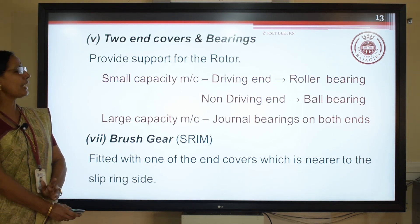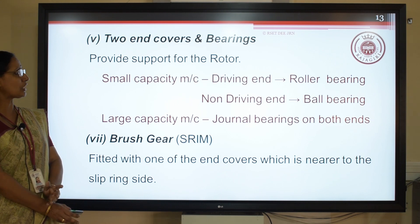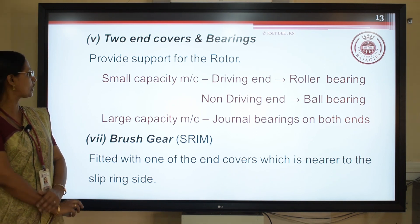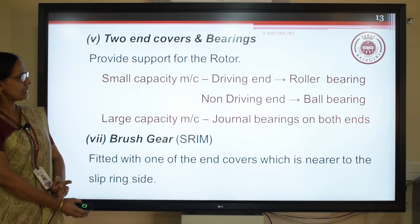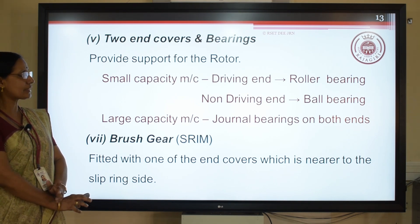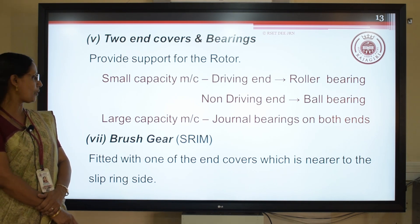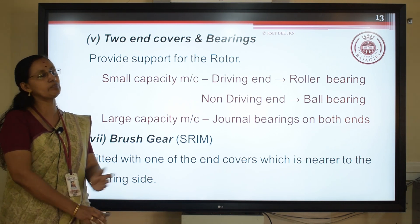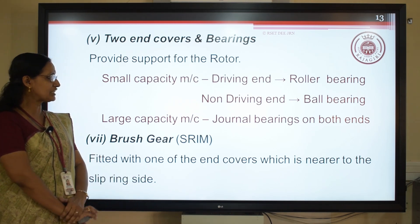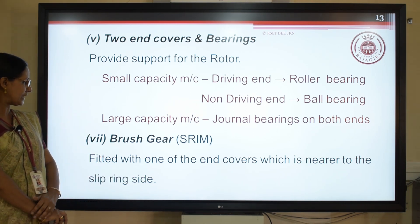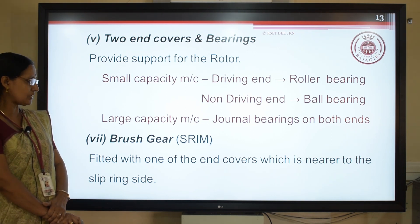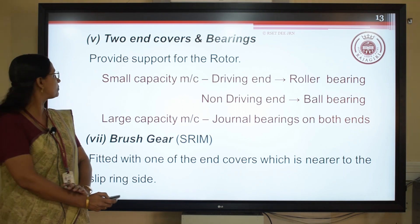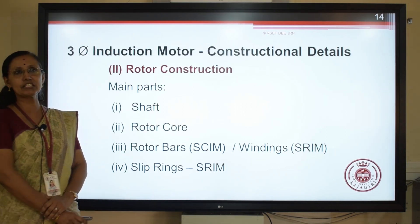The two end covers and bearings, which are part of the stator, provide support for the rotor. For small capacity machines, the driving end uses roller bearings and the non-driving end uses ball bearings. For large capacity machines, both sides are provided with journal bearings. Brush gear is applicable only for slip ring induction motor and is fitted onto one of the end covers nearer to the slip ring side. Those are the parts of the stator.